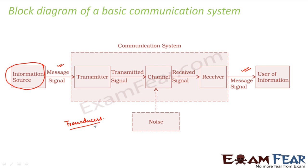For example, if it is a non-electrical signal coming from the source, the transducer will convert it into an electrical signal. You might say that is exactly what a transmitter does — the job of a transmitter is to convert the signal into a form that is capable of transmission, and that form is electrical signals. So why do we have a transducer again? What is the difference?